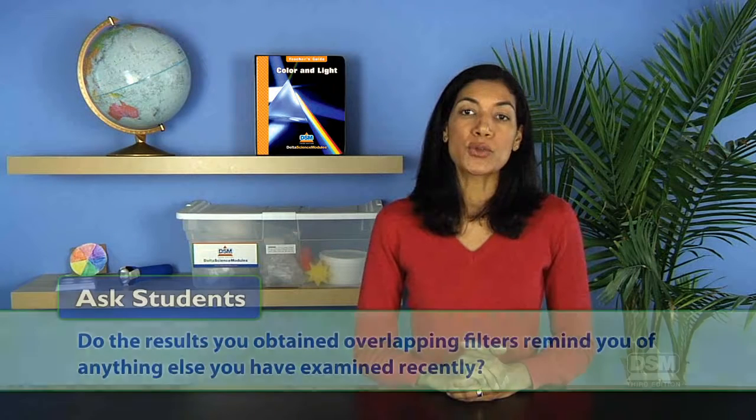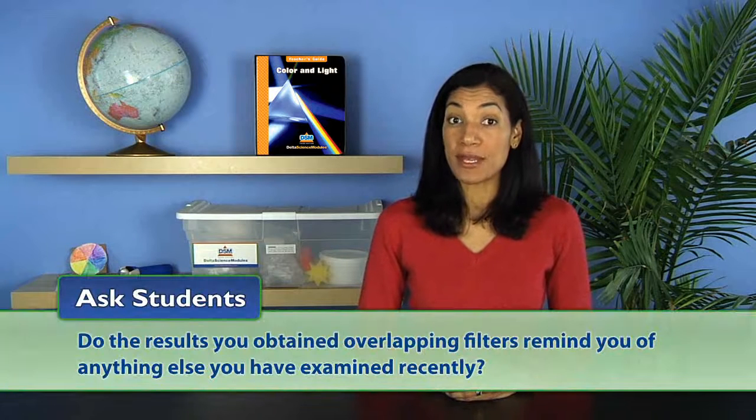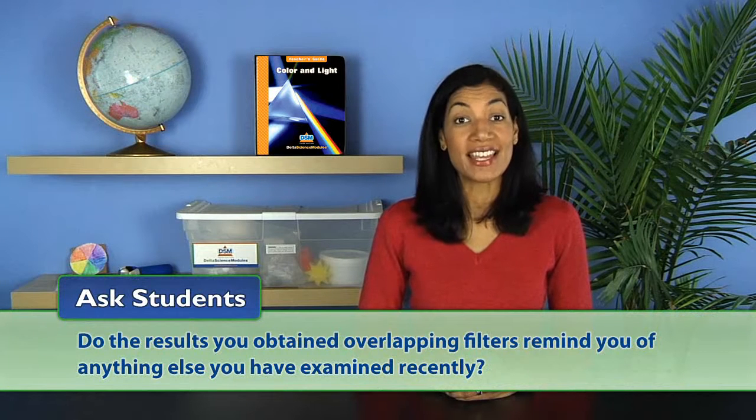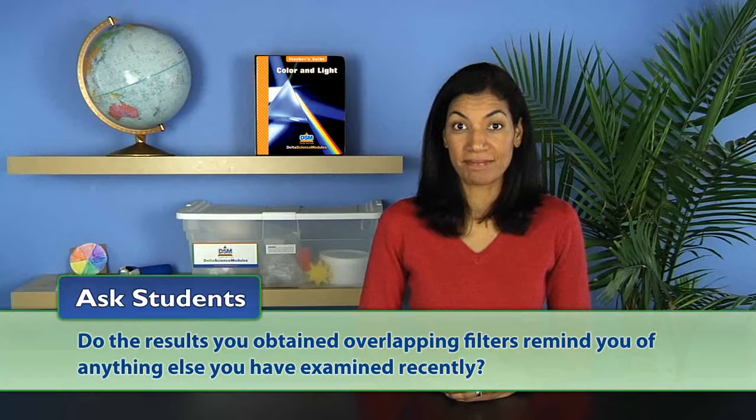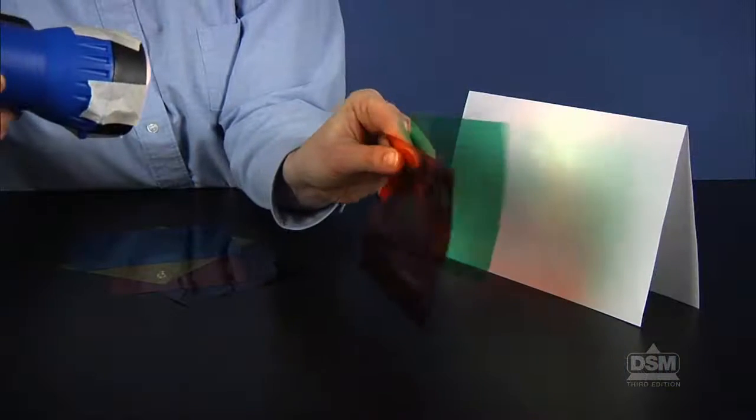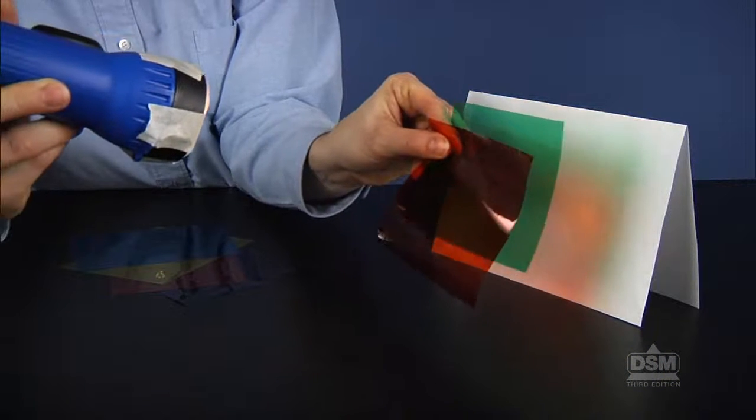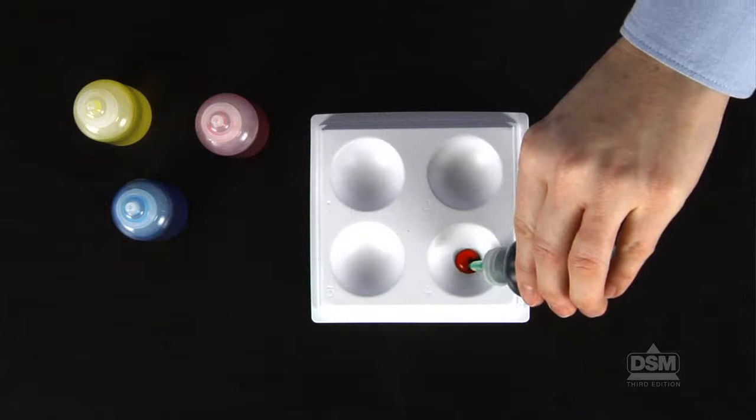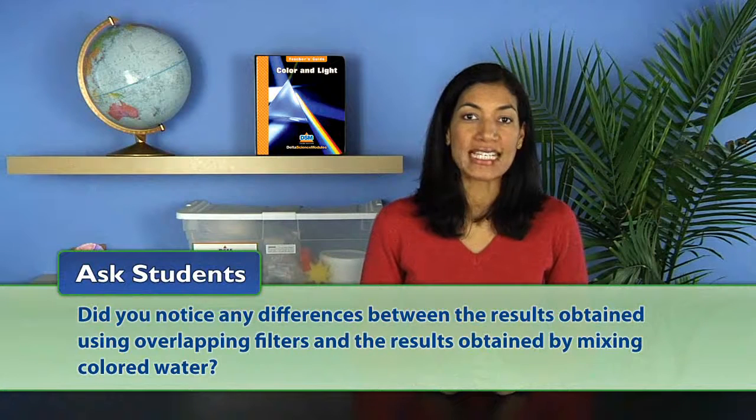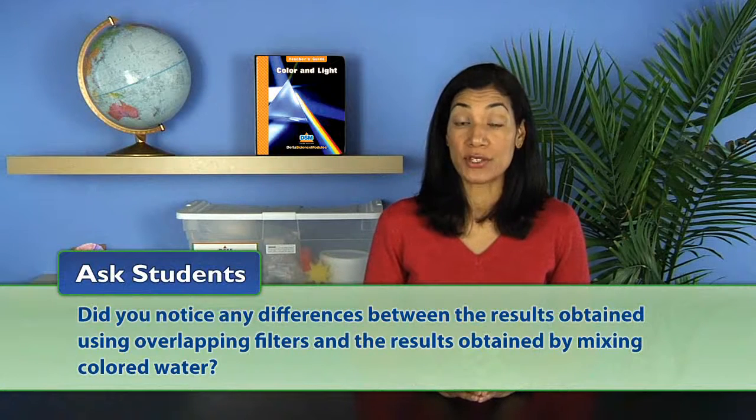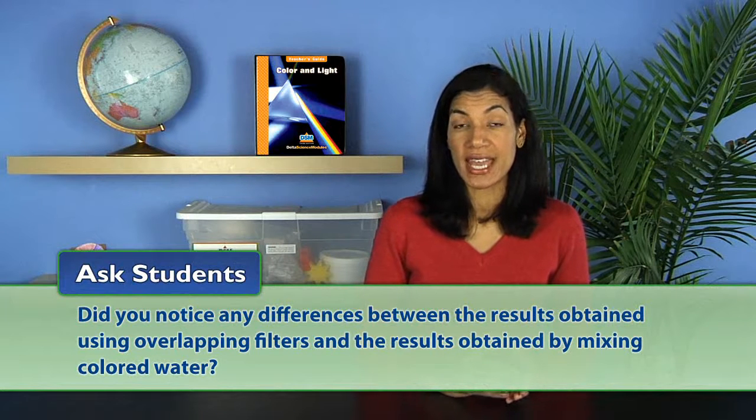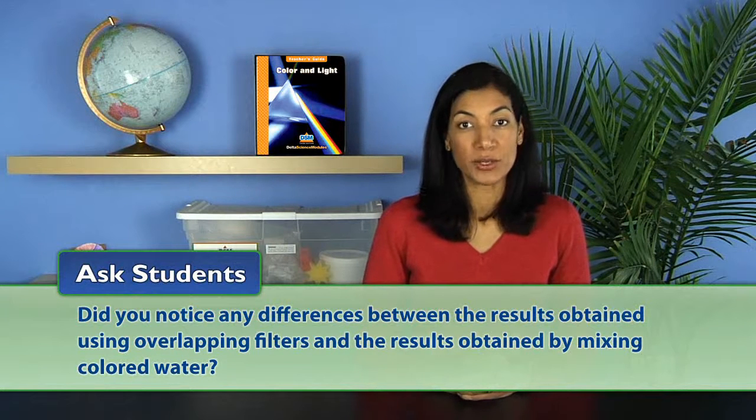Finally, turn on the classroom lights and ask students, do the results you obtained overlapping filters remind you of anything else you have examined recently? The students should recognize that overlapping the filters formed new colors similar to what they observed when mixing water colored with pigments. Finally, ask, did you notice any differences between the results obtained using overlapping filters and the results obtained by mixing colored water?